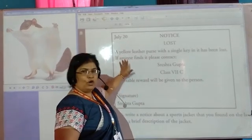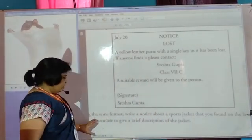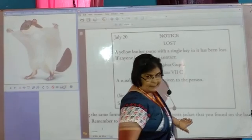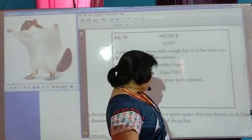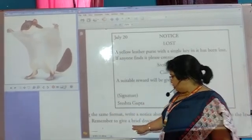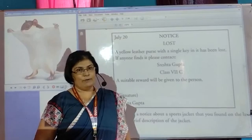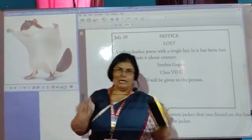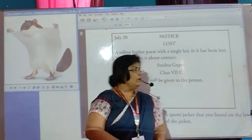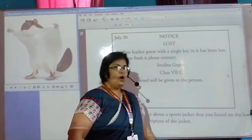There is a question below which you have to do as homework. Using the same format, write a notice about a sports jacket — the upper sort — that you found on the lawn tennis court. Remember to give a brief description of the jacket: describe how it looks, what color it is, what size it is. Then move to the contact details. Not necessarily a reward. So this will be your homework.